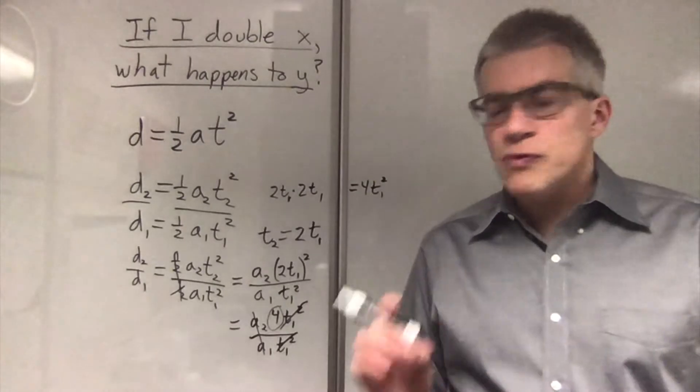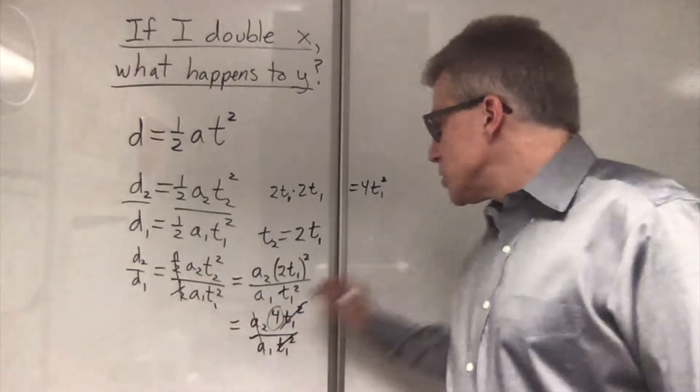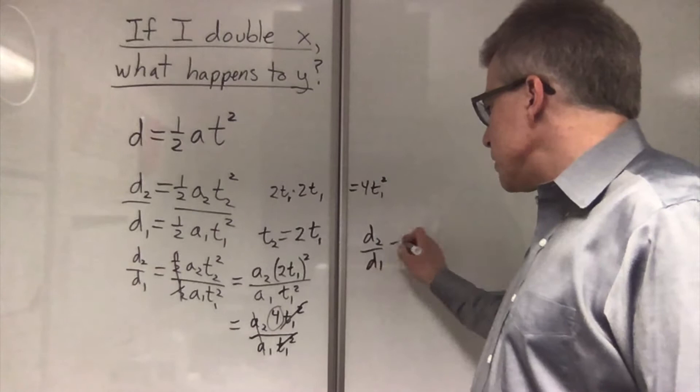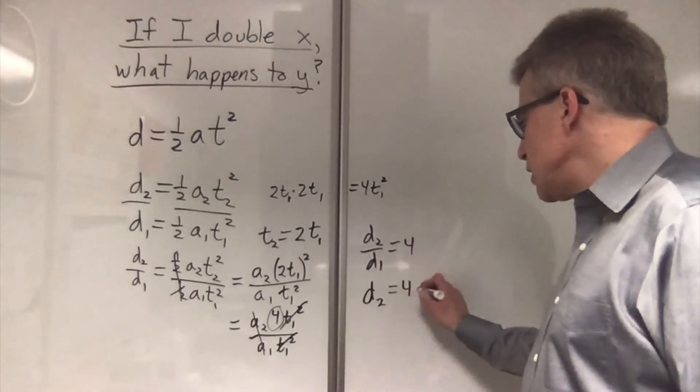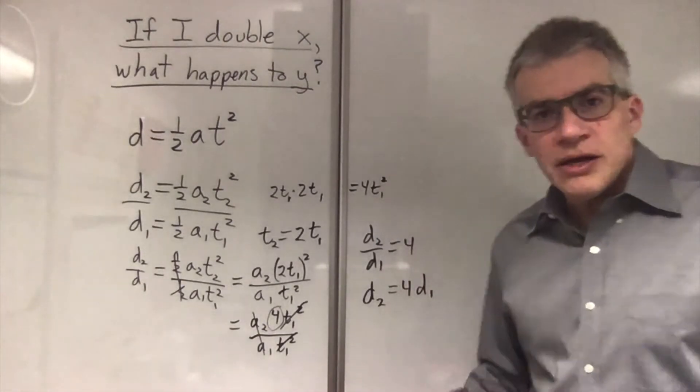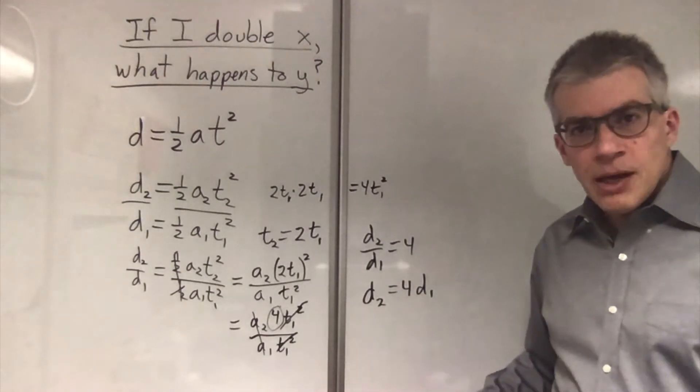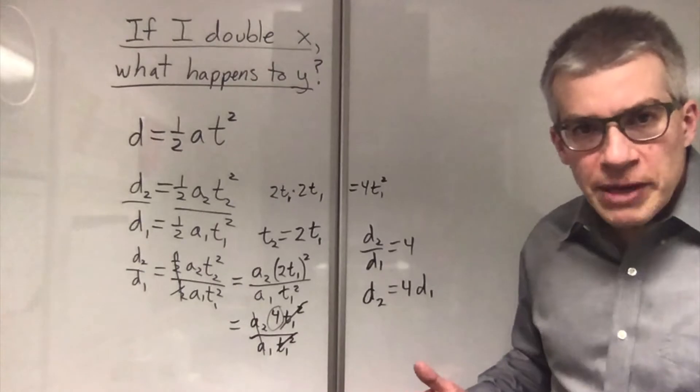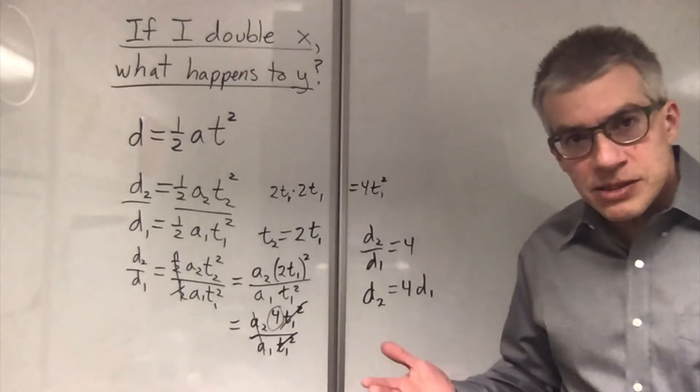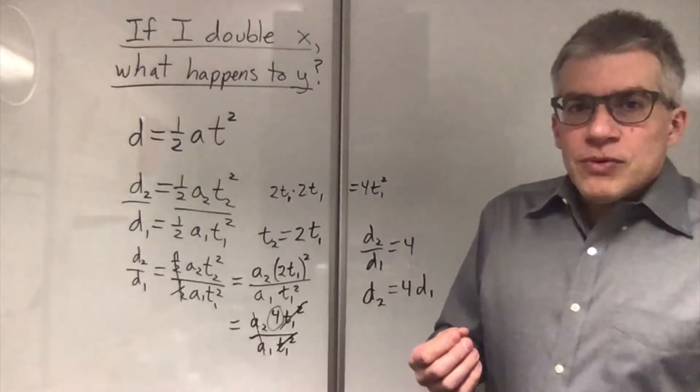Now, what does the number 4 mean? It equals d2 over d1. d2 is 4 times d1. The distance was quadrupled when you doubled the time. Now, when I'm doing this myself, I don't have to go through that procedure. I can tell at a glance. How am I doing that?